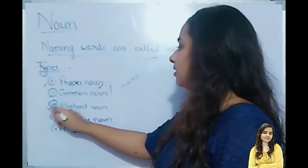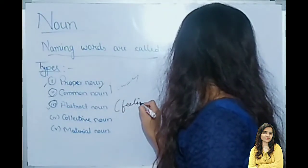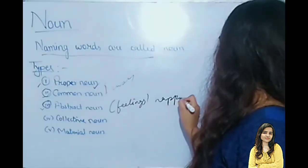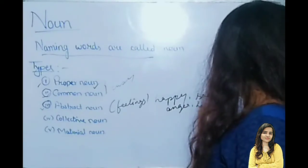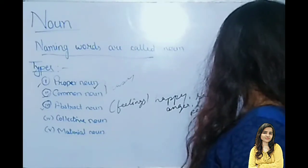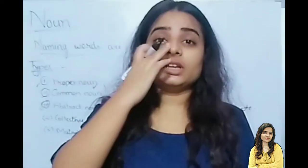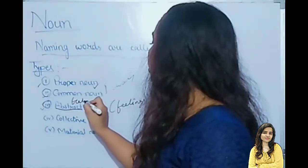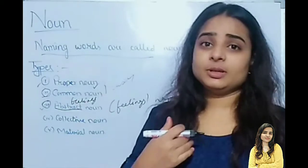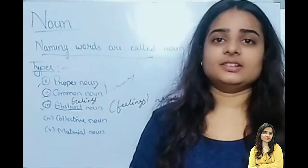Next: Abstract Noun. Abstract nouns include feelings — happy, sad, anger, hunger, peace, calm, et cetera. Basically, the feelings that people have — their mood, what they are feeling — that comes under abstract noun. Another name for abstract noun is feelings. Abstract means we can depict it with feelings.